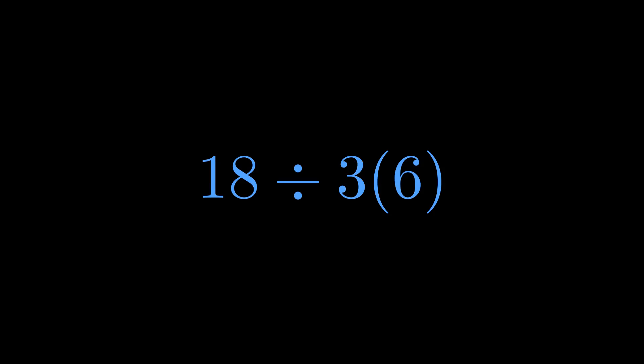So now we have 18 divided by 3 times 6. And here's the key moment where people diverge. There's something about the way 3 is written right next to the 6—no multiplication sign, just 3 parenthesis 6. It feels like they belong together. This is implied multiplication, and many people believe it should be done first.